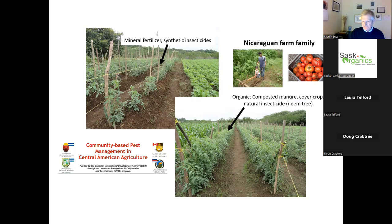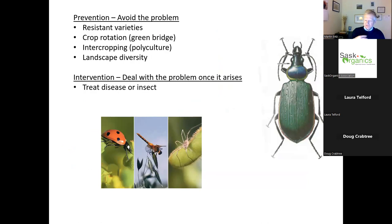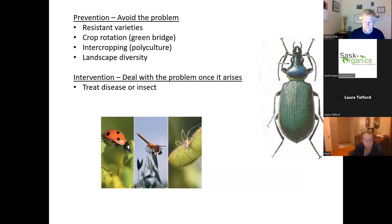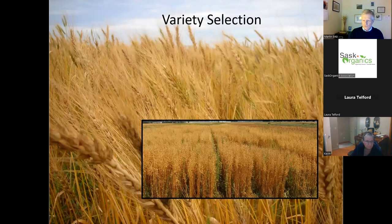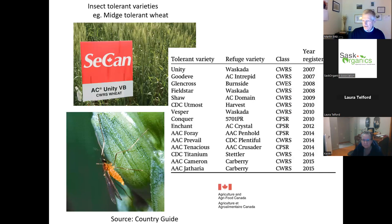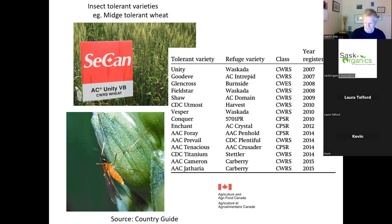With that as an introduction, let's carry on our discussion about insects in organic production. We can prevent the problem or we can intervene once the problem has arisen. One of the easy things we can do is think about variety selection. If we can select varieties - for example in the case of wheat - we have sawfly resistant varieties and midge resistant varieties, and these are good non-GMO strategies from plant breeding.